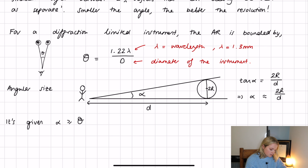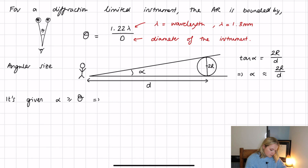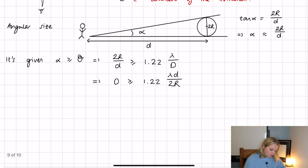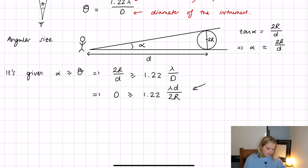Applying the condition α ≥ θ, we get 2R/d ≥ 1.22λ/D. Rearranging to solve for the instrument diameter D, we find D ≥ 1.22λd / (2R). Now we just need to relate R to the mass M.